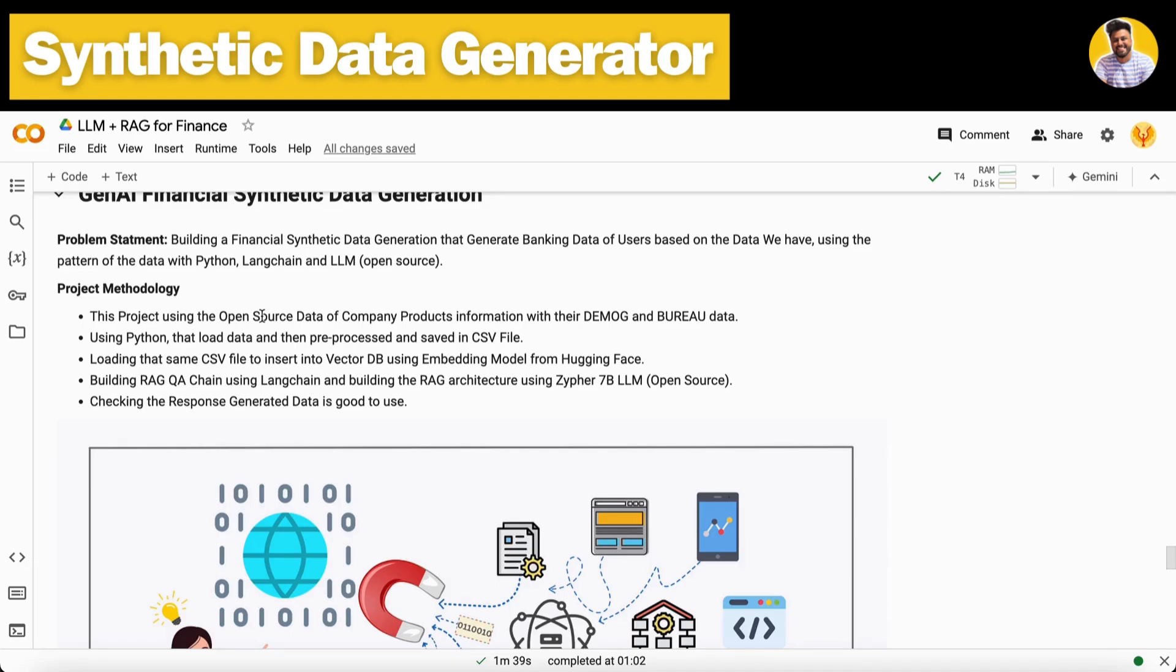With the help of Gen AI, we can build synthetic data using these processes: use open source data or generate synthetic data with normal means, use Python to pre-process it, load the data into vector DB with embedding models, then use the RAG QA chain to build our RAG LLM-based system that will generate synthetic data with Zephyr 7B LLM.